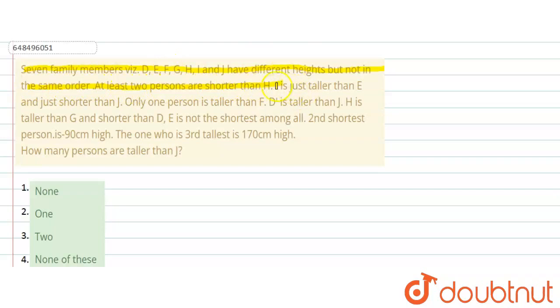At least 2 persons are shorter than H. I is just taller than E and just shorter than J. Only 1 person is taller than F. D is taller than J. H is taller than G and shorter than D. E is not shortest among all. Second shortest person is 90 cm high, the one who is third tallest is 170 cm high. How many persons are taller than J?